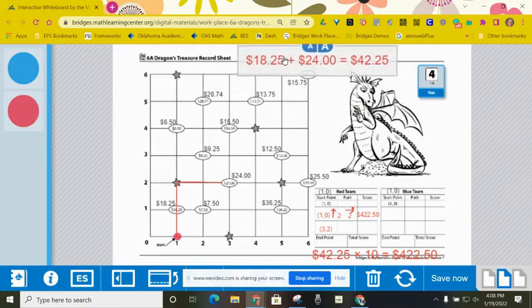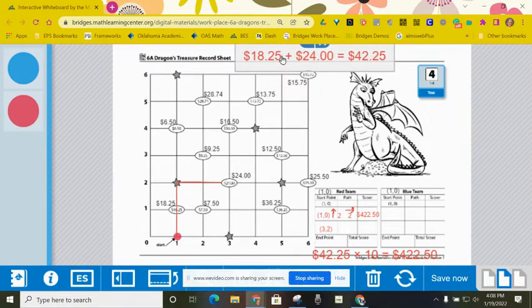So for my score, this is the way I'm going to think of it. First, I went past the $18.25. I landed on the $24.